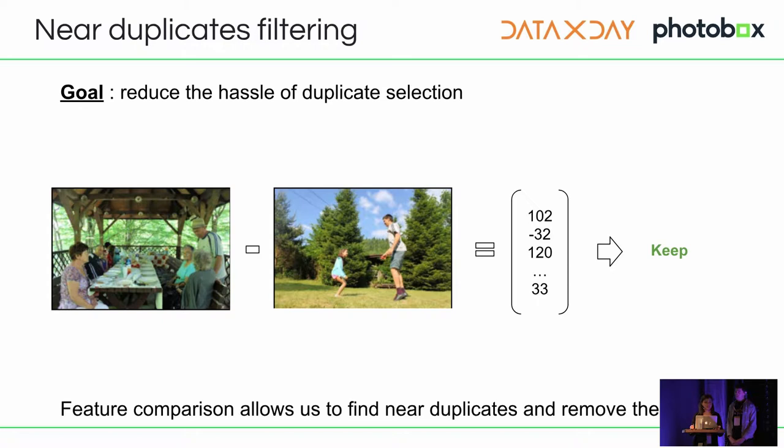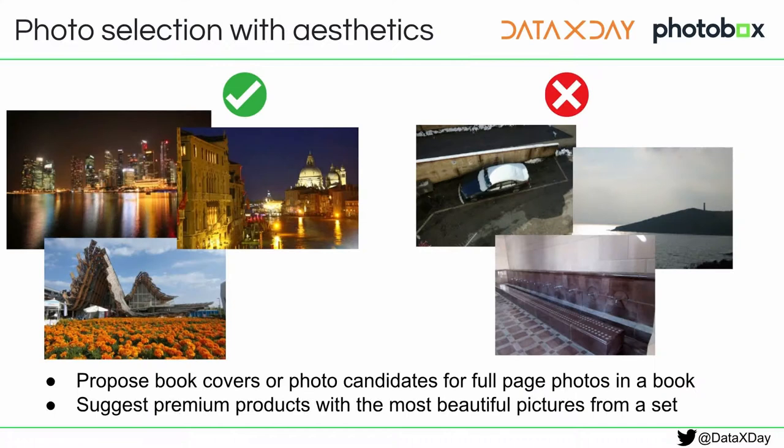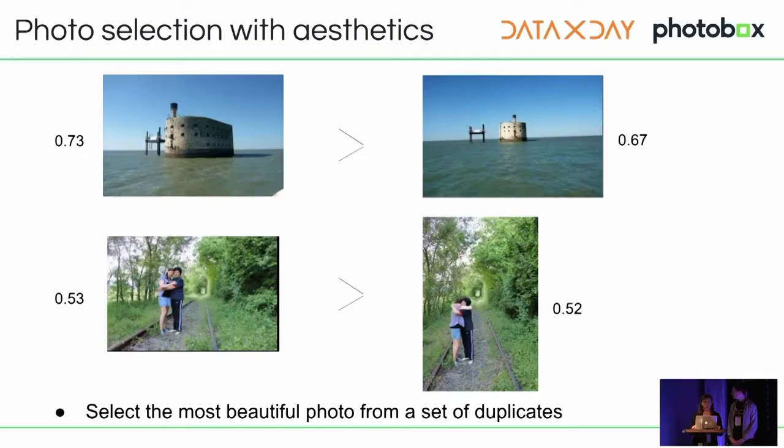Another application is photo selection with aesthetics. We are able to compute the technical aesthetic values of photos using deep learning models. We need this to propose book covers, photo candidates for full pages, or to suggest premium products with the most beautiful pictures. By analyzing user behavior, we noted a strong correlation between pictures people highlight in their albums and the aesthetic values of those photos. Aesthetics is a subjective task since it represents the beauty of a photo, which can be perceived differently by different persons. We also use aesthetics to choose the best photo from a cluster of duplicates.